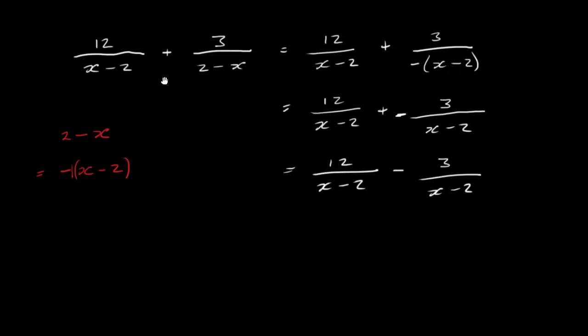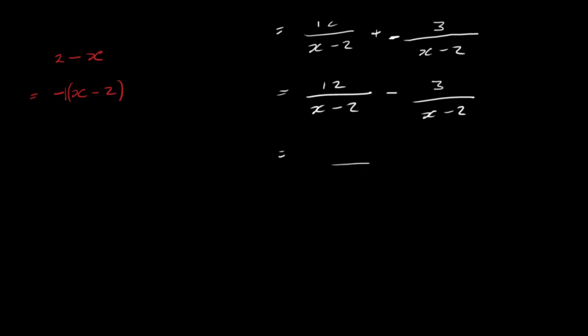What we've done is taken these two fractions and adjusted the denominator to make sure it's x minus 2. In doing that, the sign changed from plus to minus. Now both fractions have x minus 2 as the denominator, so we don't need to multiply denominators together — we just write x minus 2 as our lowest common multiple. x minus 2 into x minus 2 is 1, so we don't need to change the numerators. 12 minus 3 is 9, so the result is 9 over x minus 2.